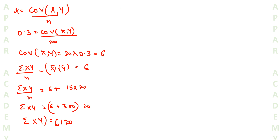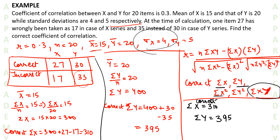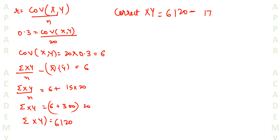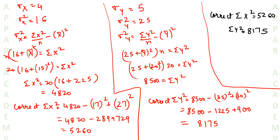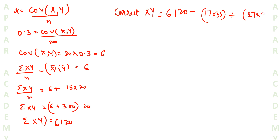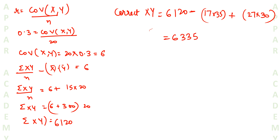We need correct Σxy. Correct Σxy equals 6120 minus (wrong x times wrong y) plus (correct x times correct y). That is: 6120 minus (17 times 35) plus (27 times 30), which equals 6120 minus 595 plus 810, giving correct Σxy equal to 6335.